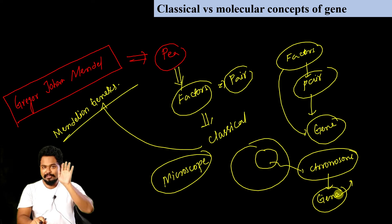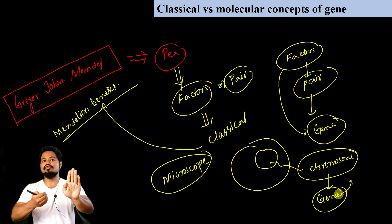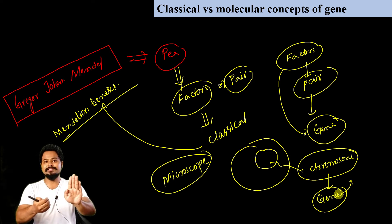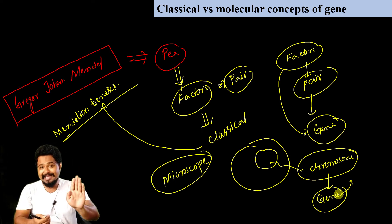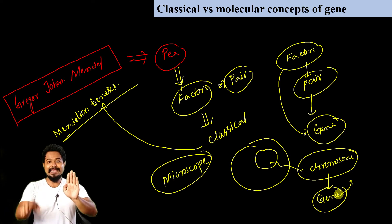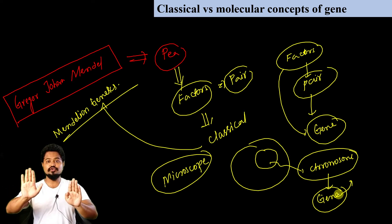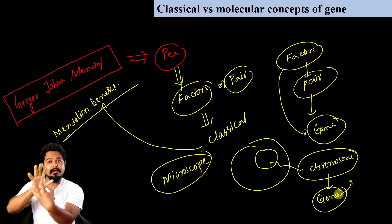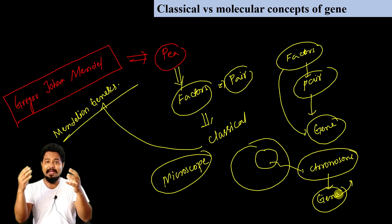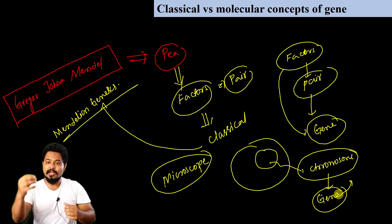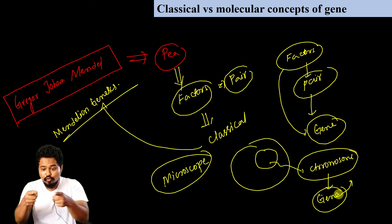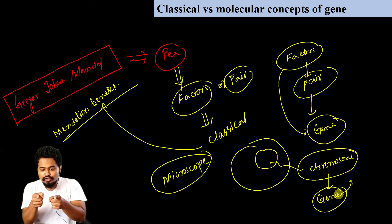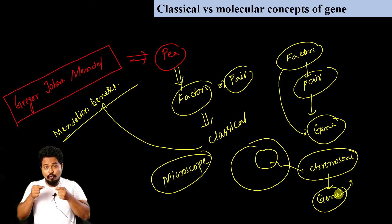This is the concept of Mendel — classical concept. The microscope was discovered, and scientists began studying in detail. With the microscope, the diploid situation, chromosome, and protein were examined.